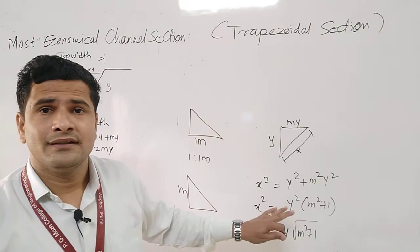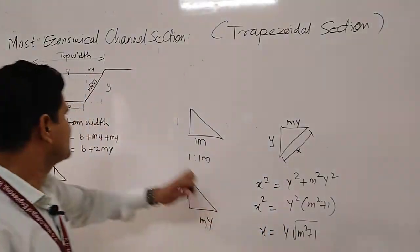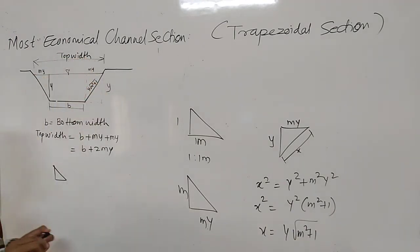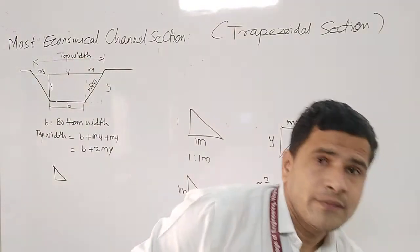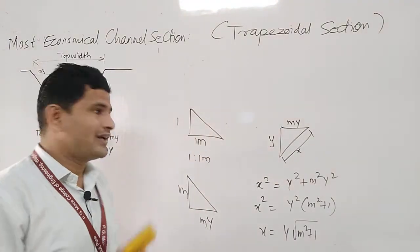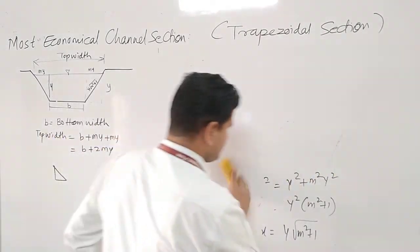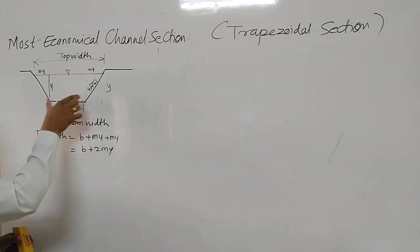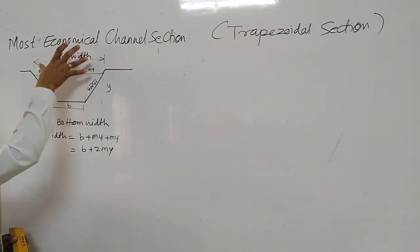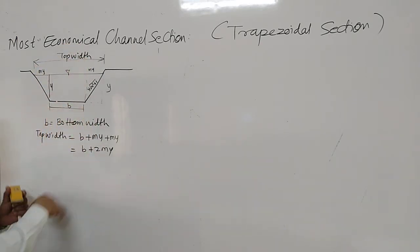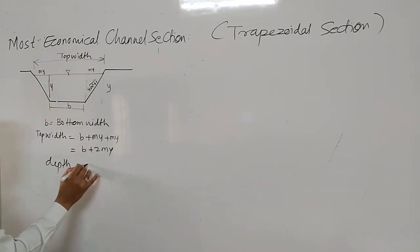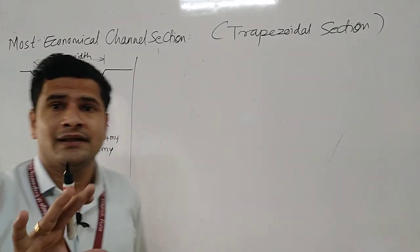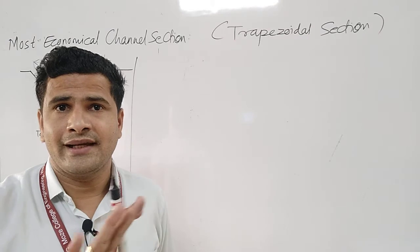This is simple geometry. We need to remember: the horizontal distance is m·y, and the inclined sloping side is y√(m² + 1). We need these values for the derivation. I think the top width, bottom width, and depth of section y are now clear to everyone. We have cleared all the doubts and now we are moving towards the derivation.